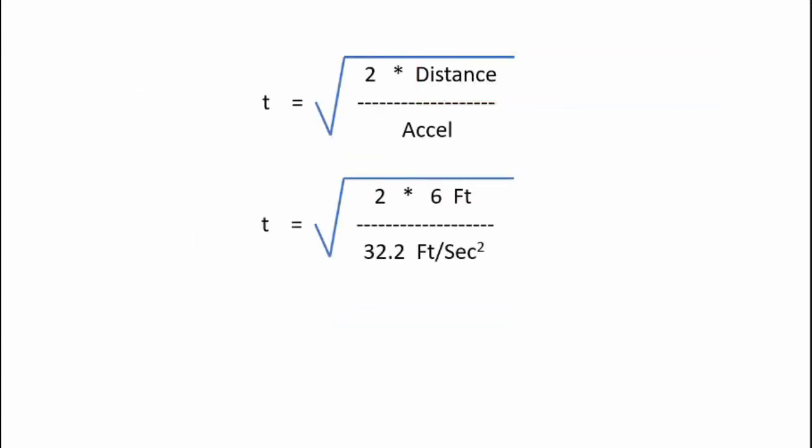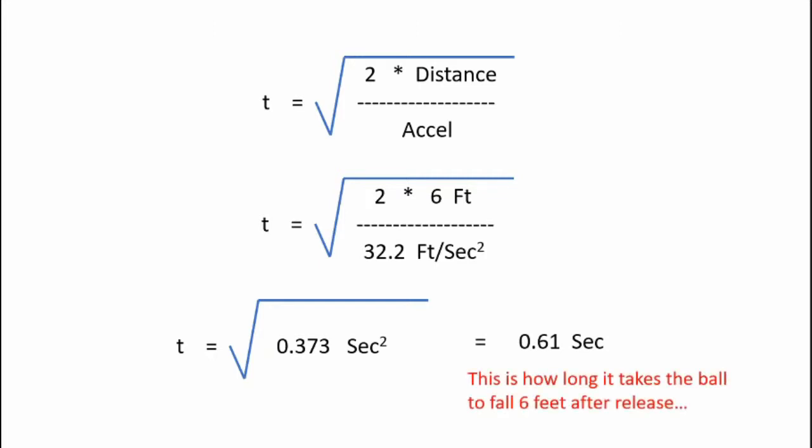Now putting in some numbers, we have two times six feet divided by 32.2 feet per second squared. Do the math, we get t is equal to the square root of 0.373 seconds squared. When we take that square root, we find out that t is equal to 0.61 seconds. And that is the fall time of our ball over a distance of six feet.